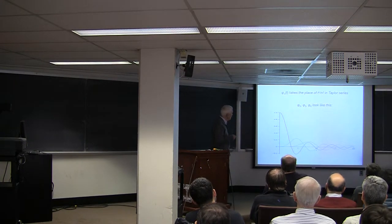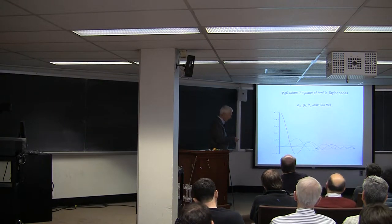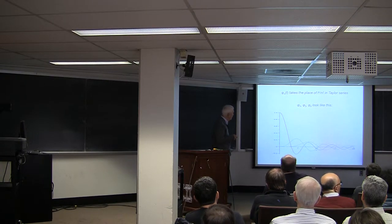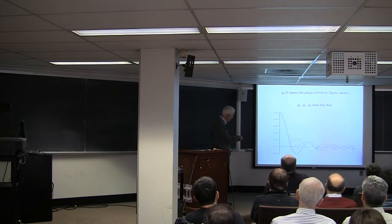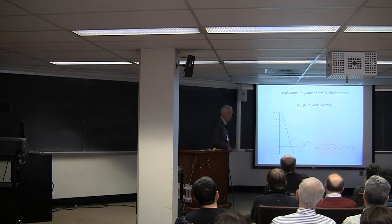What do these phi_n of t look like? These phi_n of t take the place of t to the n in Taylor series. Phi_0 looks like this, and phi_3 and phi_6, etc. Looks familiar, doesn't it?